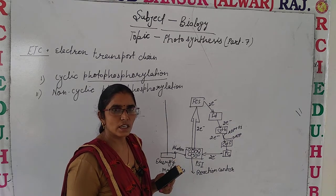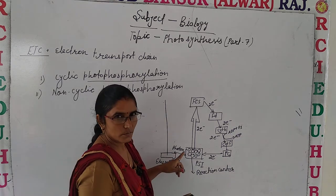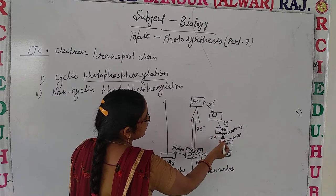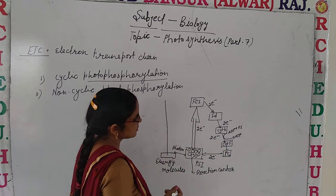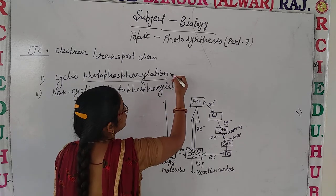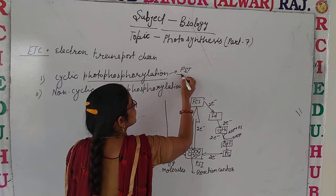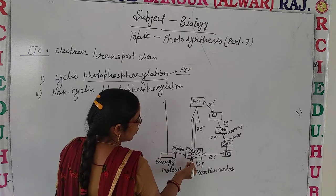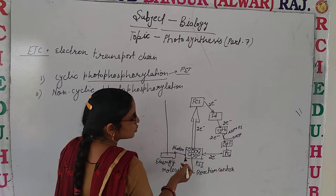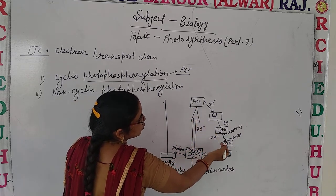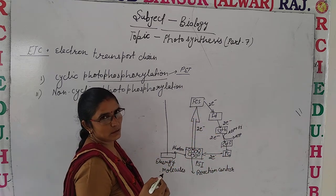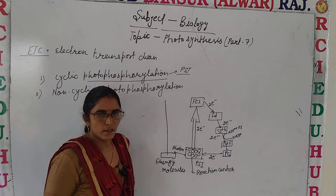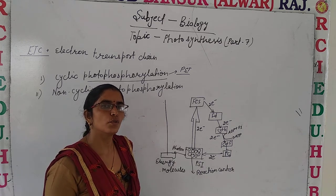Let's discuss cyclic photophosphorylation. In cyclic photophosphorylation, the electrons move through various electron acceptors. One key point is that in cyclic photophosphorylation, only PS1 — photosystem 1 — takes part. It is called cyclic because the electrons released through PS1, after passing through various electron acceptors, return back to PS1. That is, where the electron's movement started, the electron returns to the same point — hence it is known as cyclic photophosphorylation.